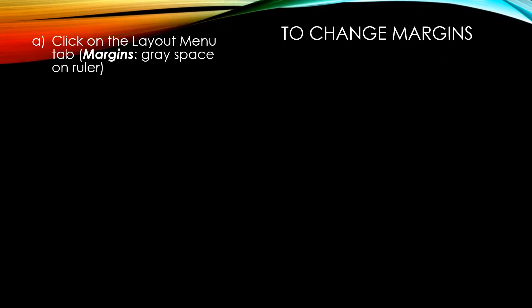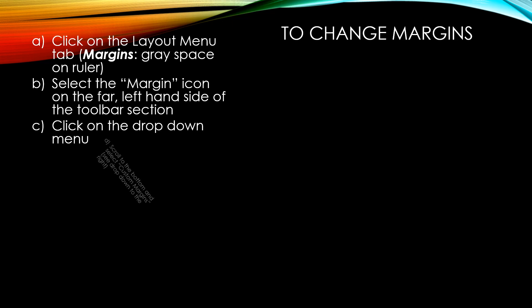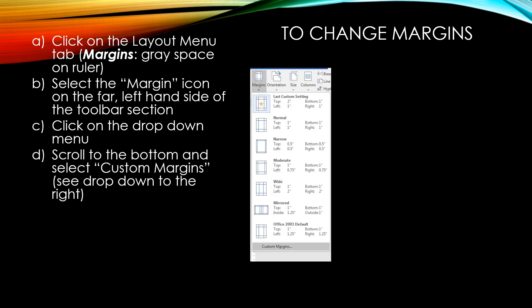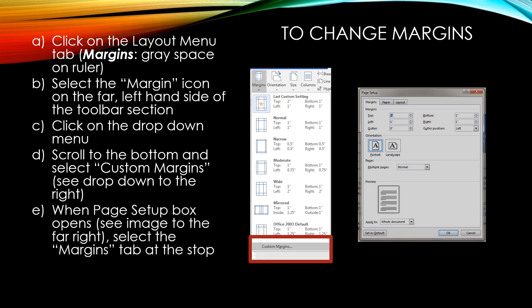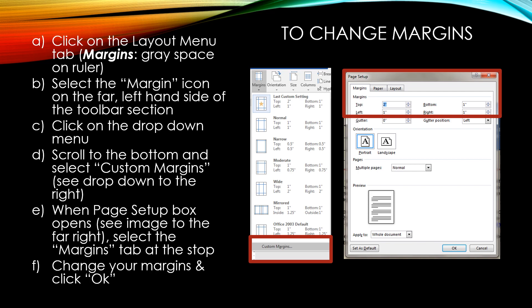Changing margins. To change margins, click on the Layout menu tab. Select the margin icon on the far left-hand side of the toolbar section. Click on the drop down menu, scroll to the bottom and select Custom Margins. When the Page Setup box opens, select the Margin tab at the top. You will see that you can change your top, bottom, left, and right margins. Once you have your margins fixed, click OK.